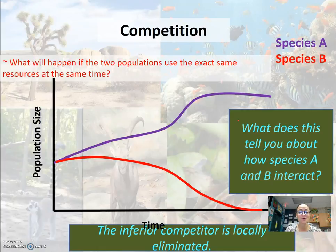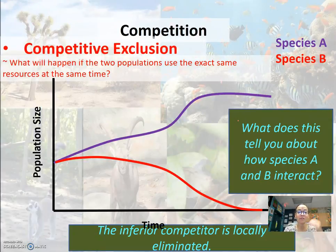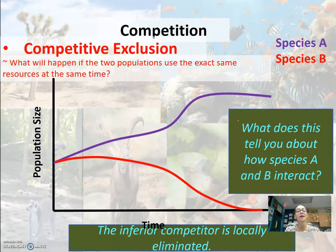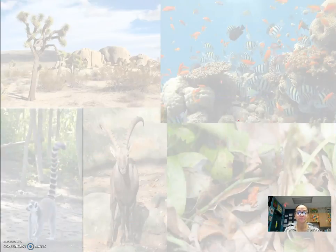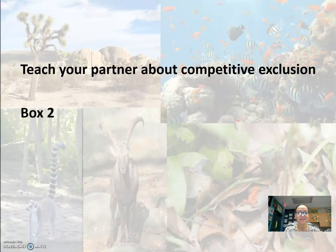The inferior competitor is locally eliminated, whether through emigration or death. We call this competitive exclusion. When two different species or populations compete for the same resource, one of them will be excluded from that area. That's box two — competitive exclusion.